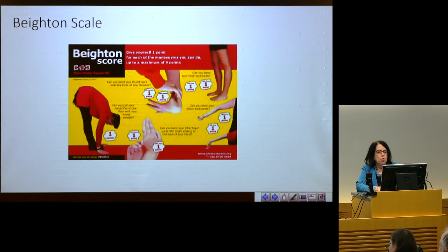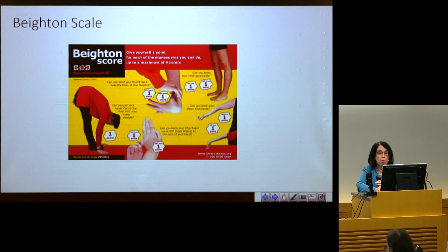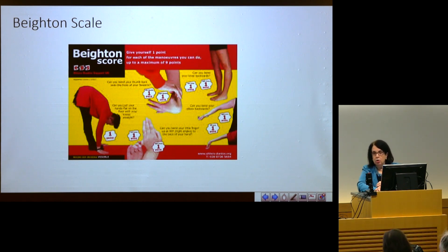The Beighton score, as Laura mentioned, is what we are still using to define joint hypermobility, because it is the only validated criteria that is published and well recognized and accepted at this time. This is a nine-point scale, and we now have age-specific cutoffs for the diagnosis of generalized joint hypermobility using the Beighton score.